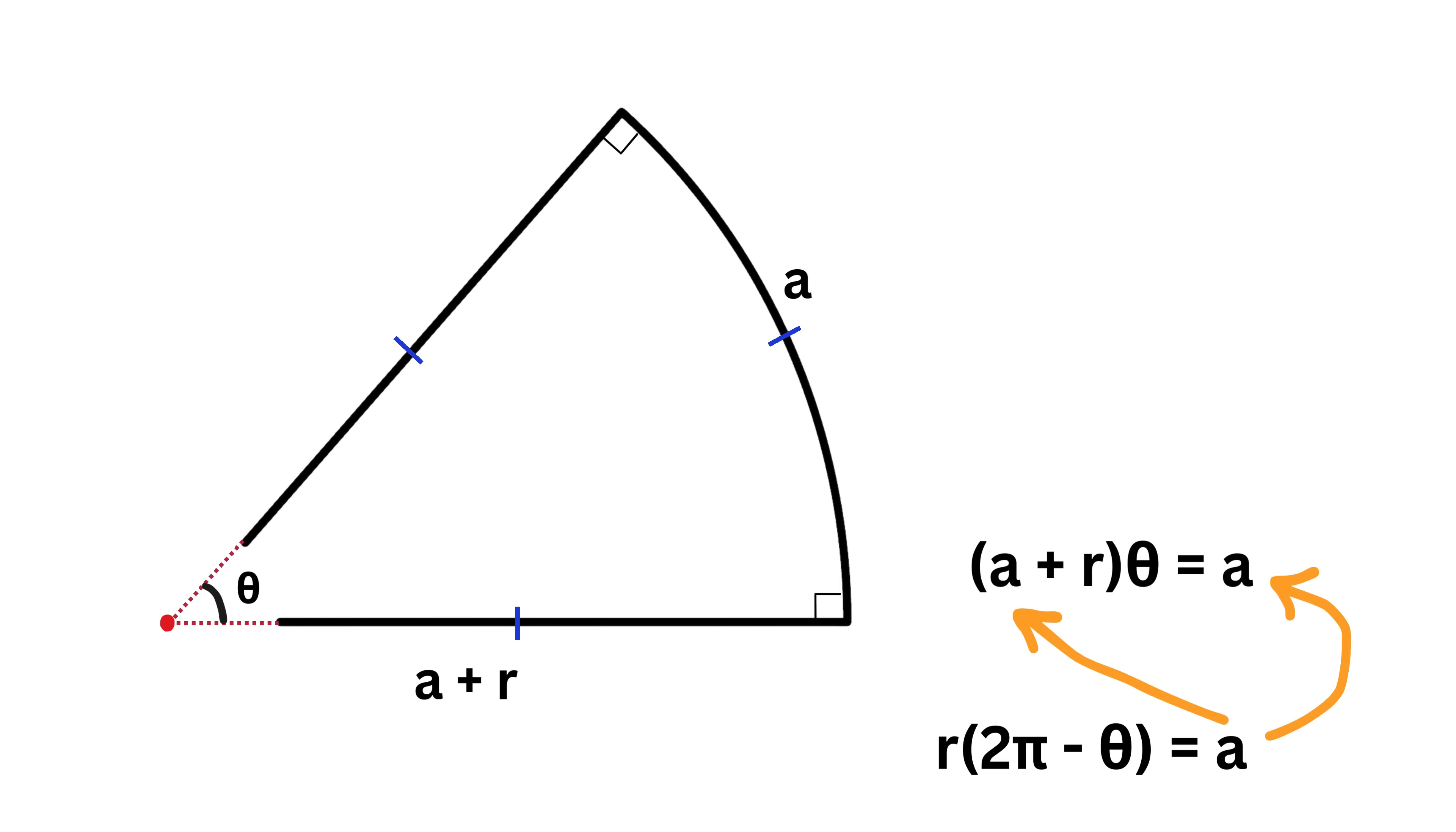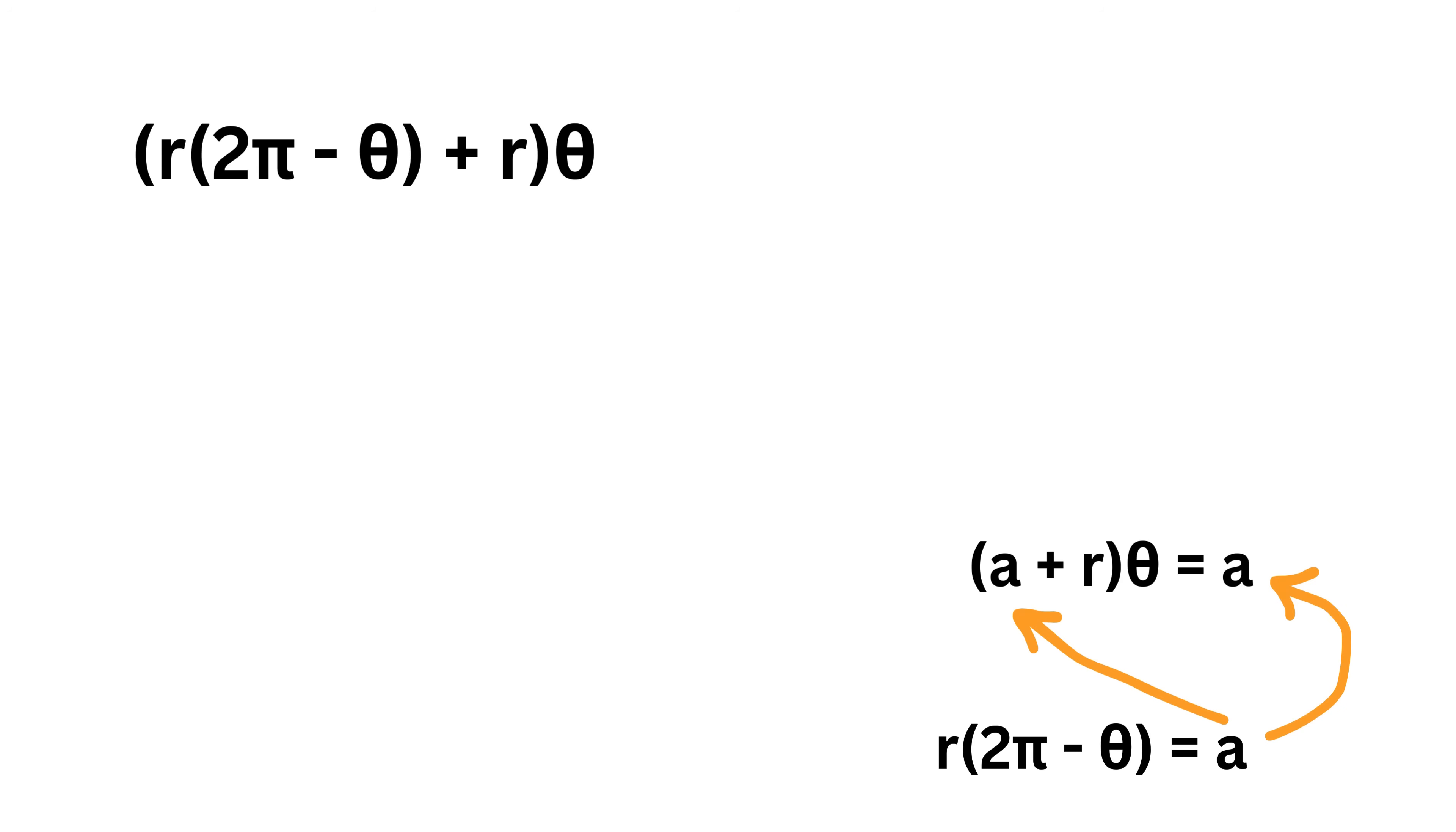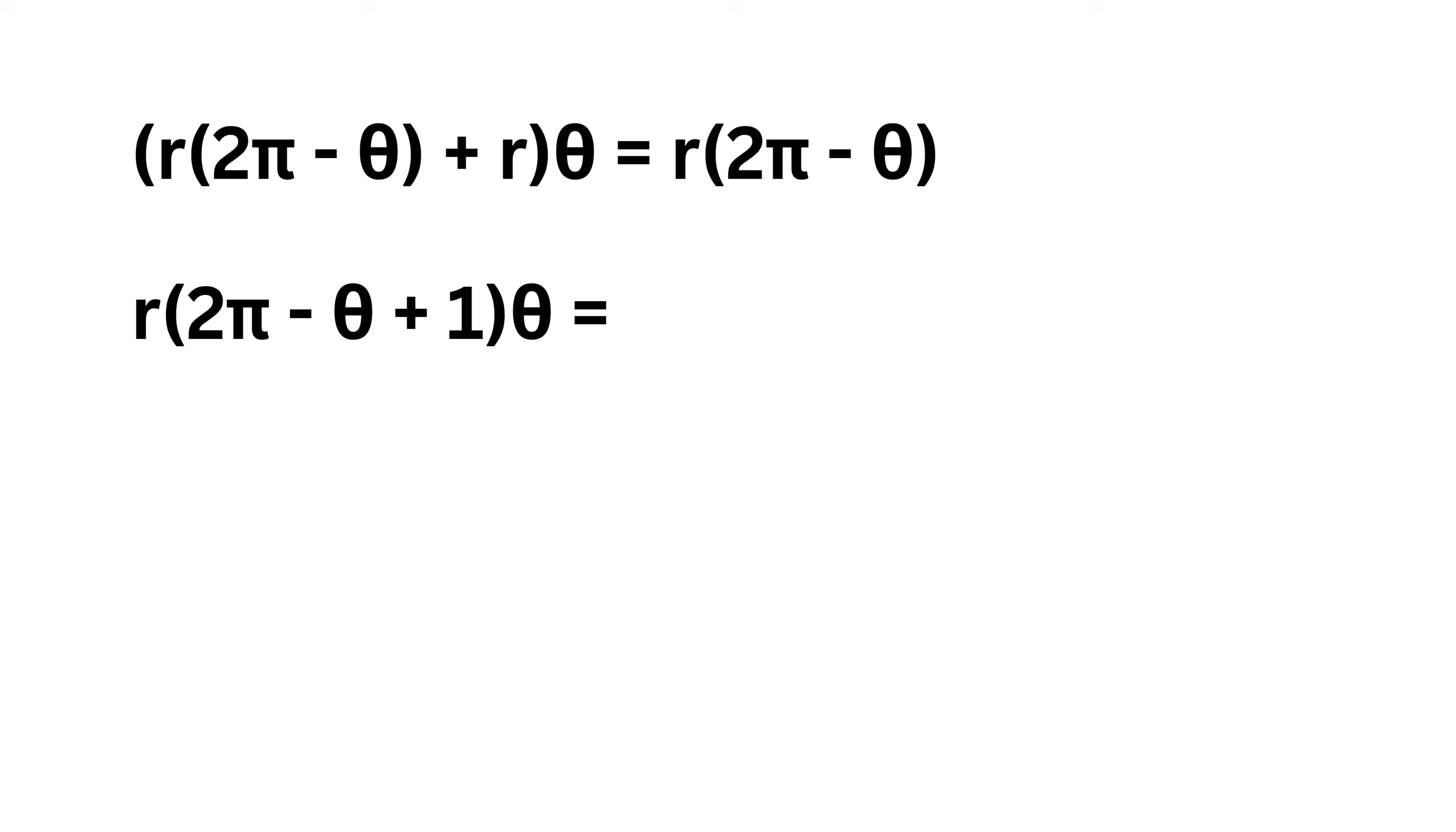Hey, we can substitute the value of a here to get this as r times (2 pi minus theta) plus r whole times theta equals this is also r times (2 pi minus theta). Take r as common from both of them to get r times (2 pi minus theta plus 1) times theta equals r times (2 pi minus theta). Oh my god! r gets cancelled from both sides and we are left with this.